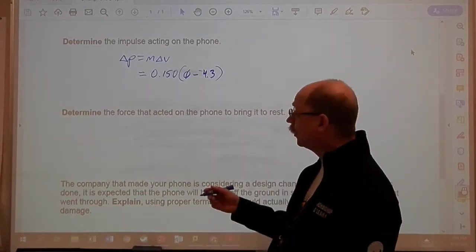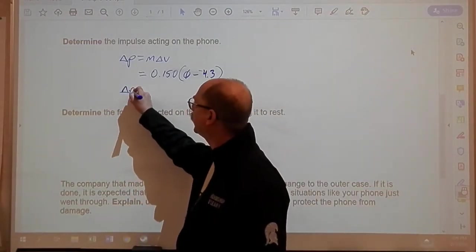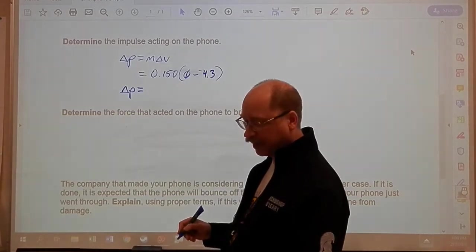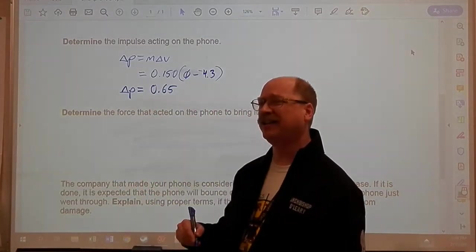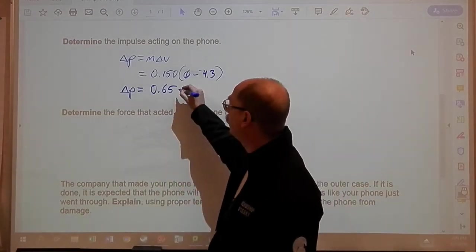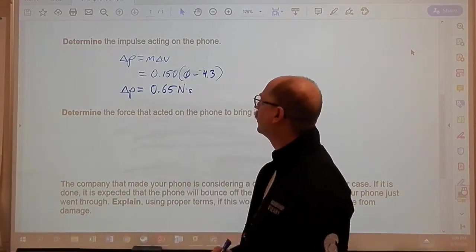So when I do my calculation, the impulse that's acting on it comes out as .65. Now, you could write this again in either kilogram meters per second or newton seconds. It doesn't matter. They're equivalent units.